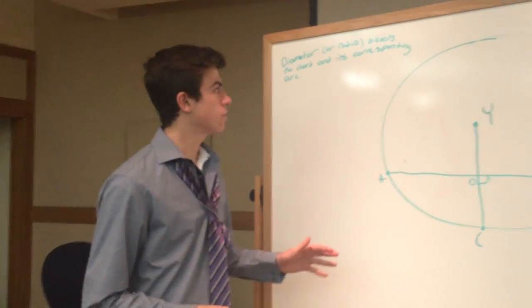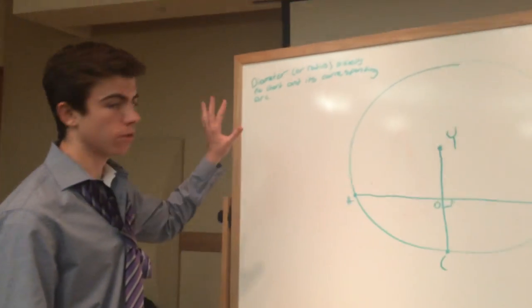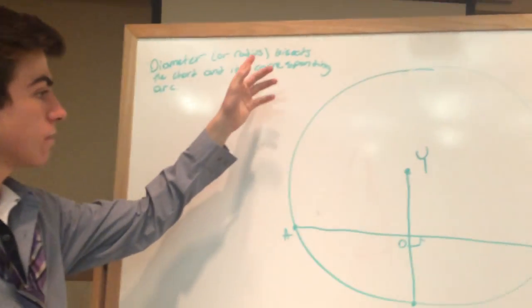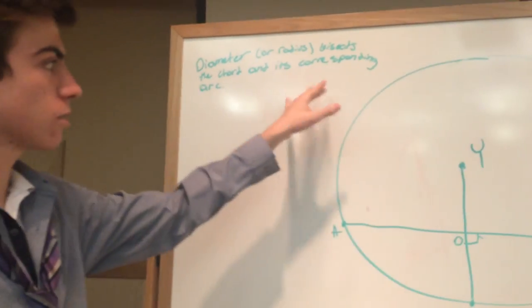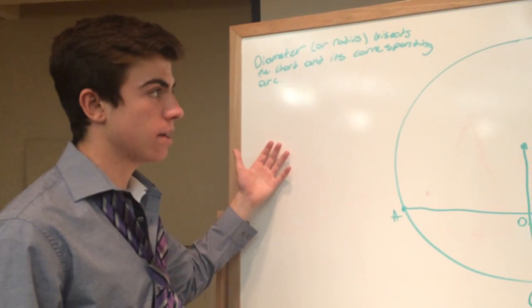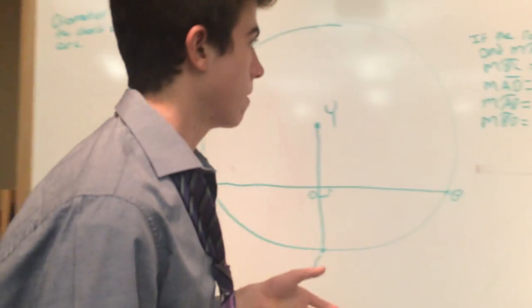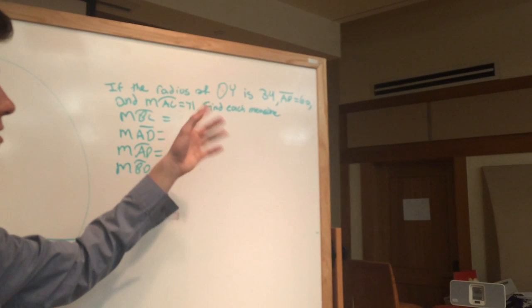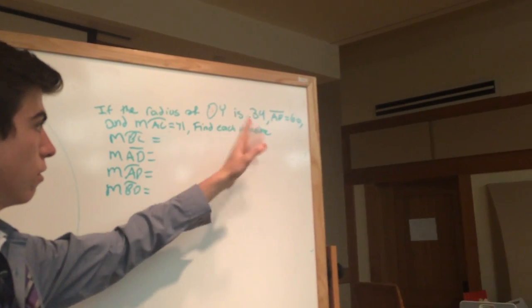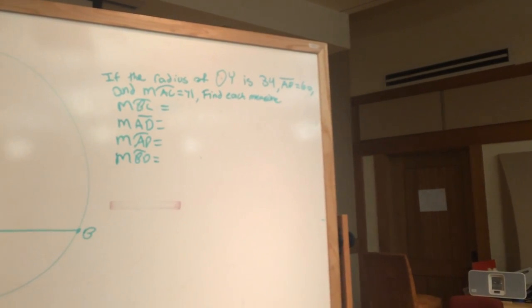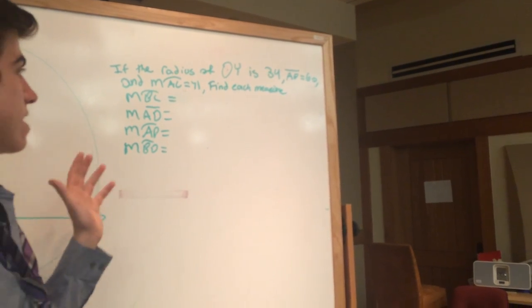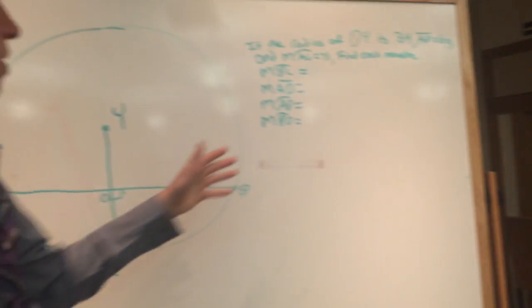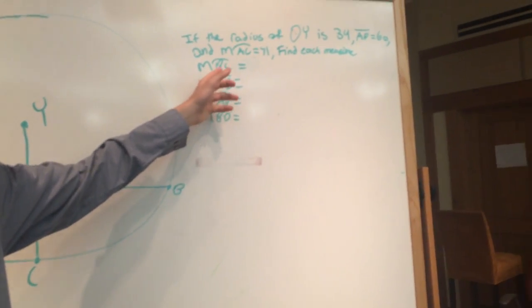Here's the example question. A reminder: if a diameter or radius is perpendicular to a chord, then it bisects the chord and its corresponding arc. The question is: if the radius of circle Y is 34, the length of line AB is 60, and the measure of arc AC is 71, find each measure. Let's find the measure of arc BC.